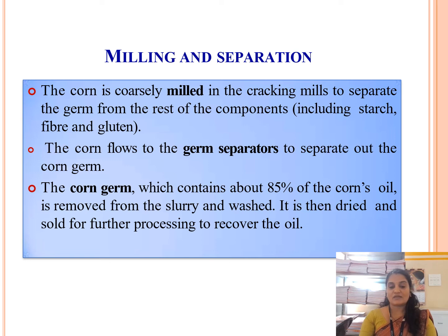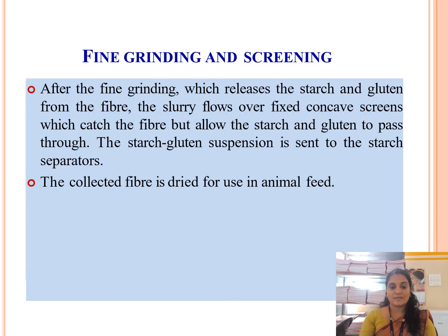After fine grinding and screening, the grinding releases starch and gluten from the fiber. The slurry flows over a concave screen which catches the fiber but allows the starch and gluten to pass through. The starch and gluten suspension is then sent to the starch separator. The collected fiber is dried for use in animal or cattle feed.